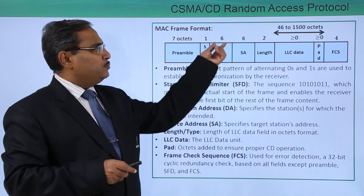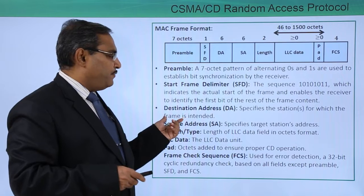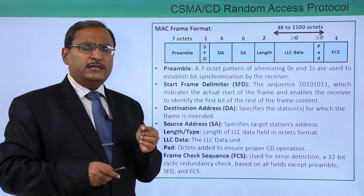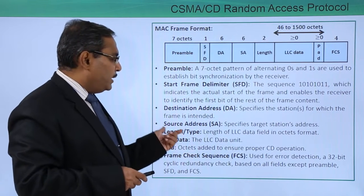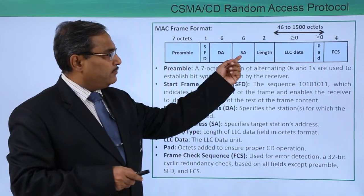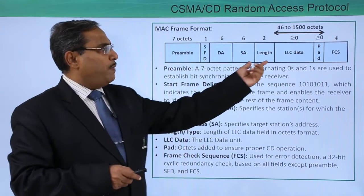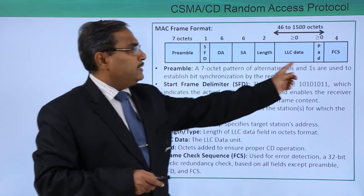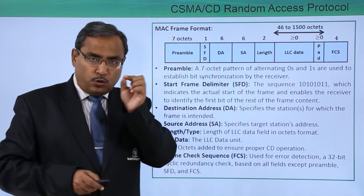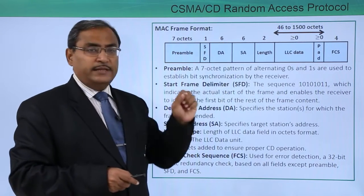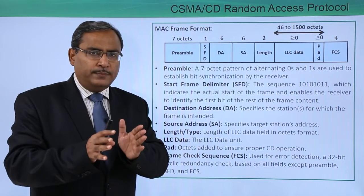Next is the Destination Address (DA), which is 6 bytes — 48 bits — specifying the station for which the frame is intended. This matches the 48-bit Ethernet address. The Source Address (SA) is also 6 bytes (48 bits), specifying the sending station's address. Following that is a 2-byte Length/Type field containing the byte count of the LLC (Logical Link Control) data, since the LLC data has no fixed size.